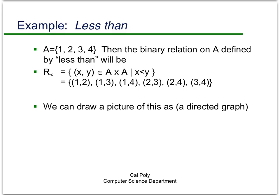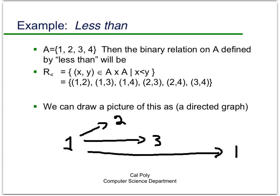We can draw a picture of this as a directed graph. We put 1 here, and since 1 < 2 we draw an arrow from 1 to 2; 1 < 3 and 1 < 4 get arrows as well. Then an arrow from 2 to 3 because 2 < 3, from 2 to 4 because 2 < 4, and from 3 to 4 because 3 < 4. We'll come back to this — it's important to know that there are two different ways of representing relations, and we'll use whichever is convenient.